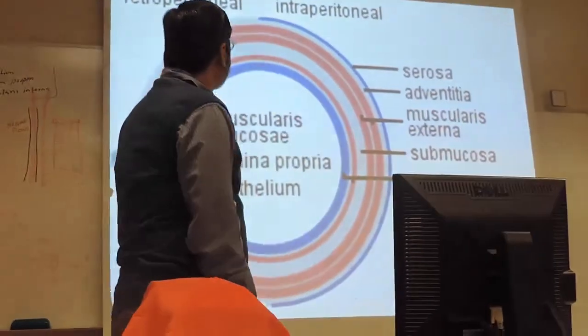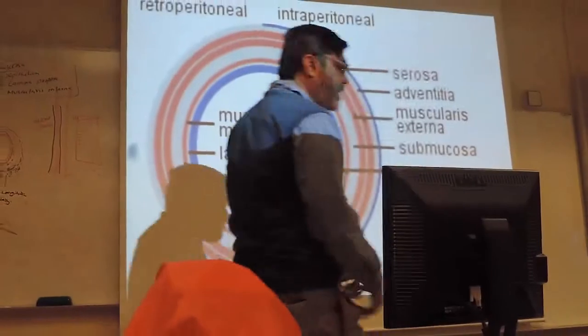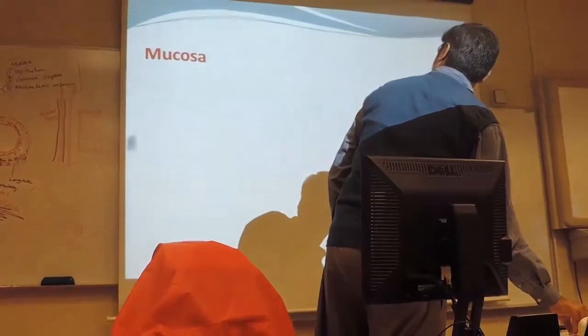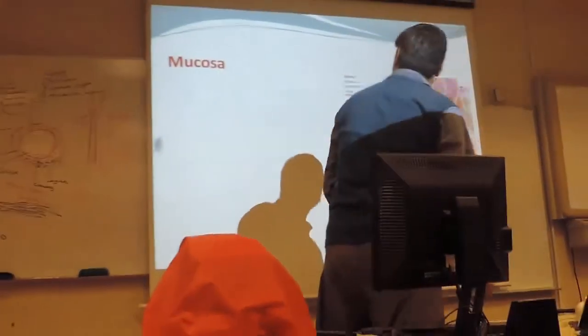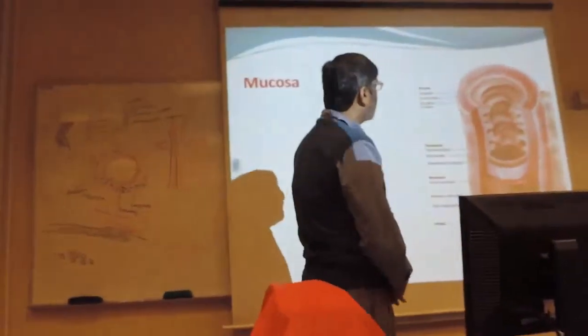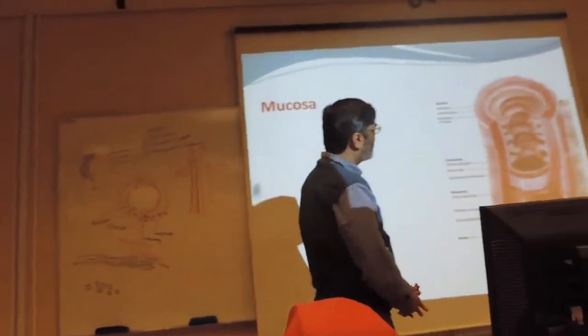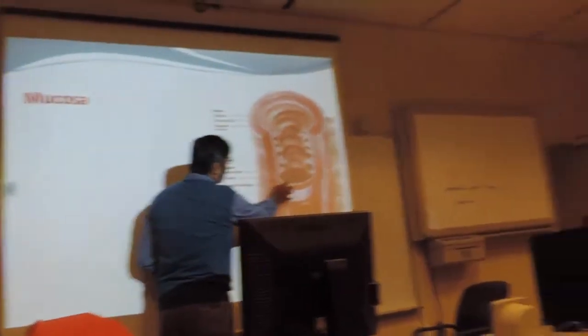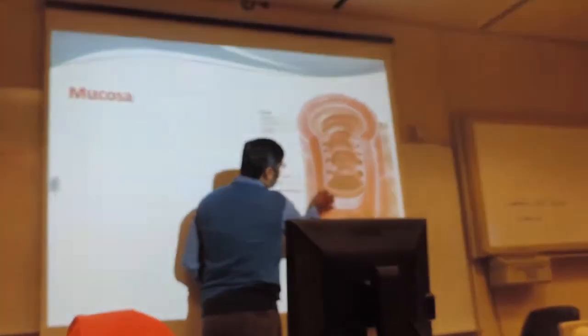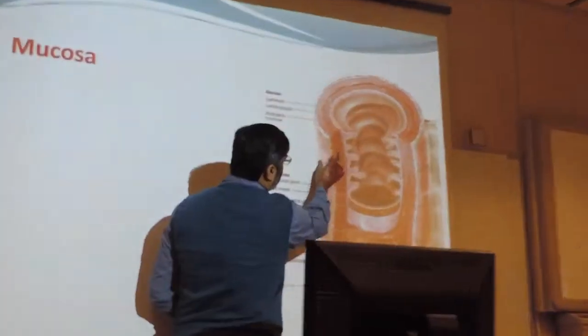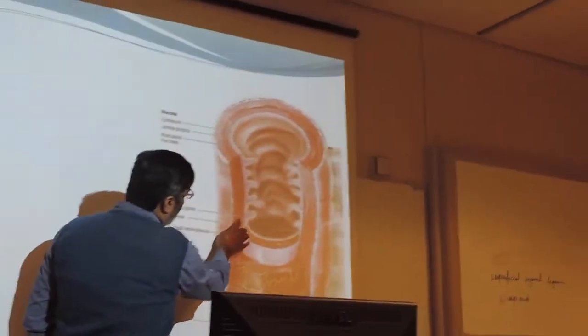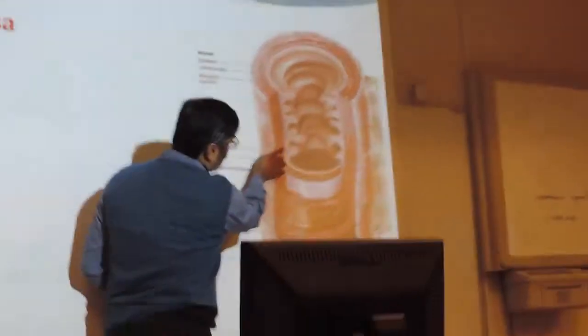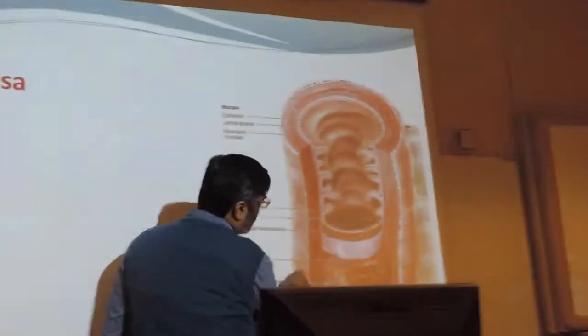Now let's come to the esophagus. This is the general plan I told you. These are the four layers. This is mucosa, then the muscle layer, and outside adventitia. We also have submucosa. You can see the mucosa — the mucosa has been thrown into folds.